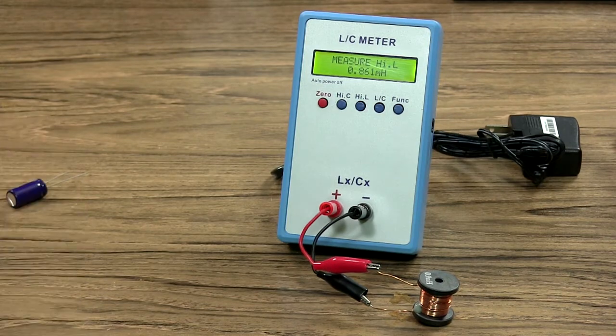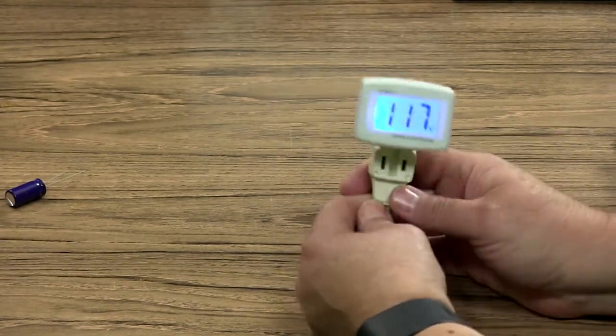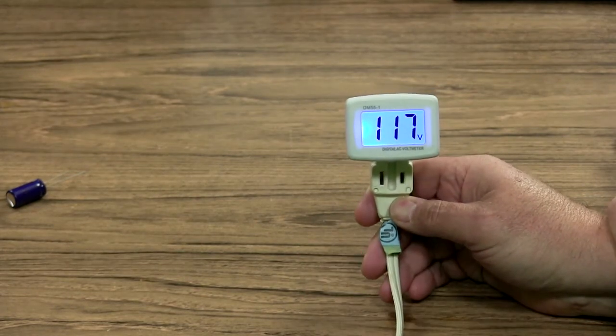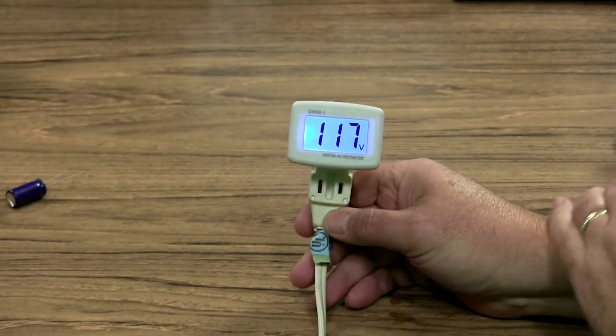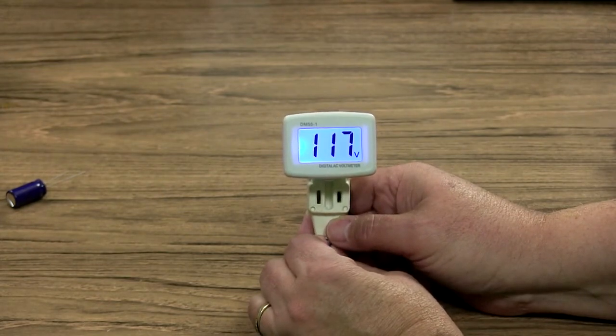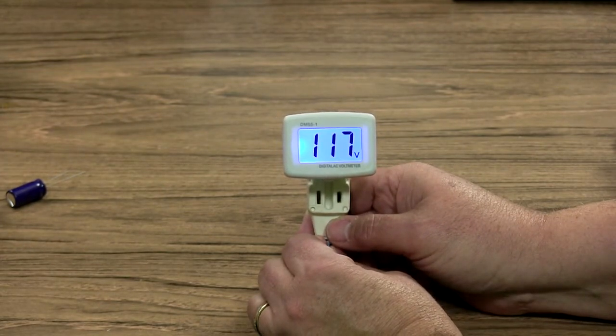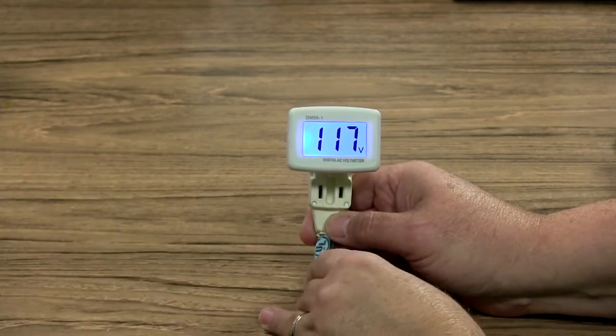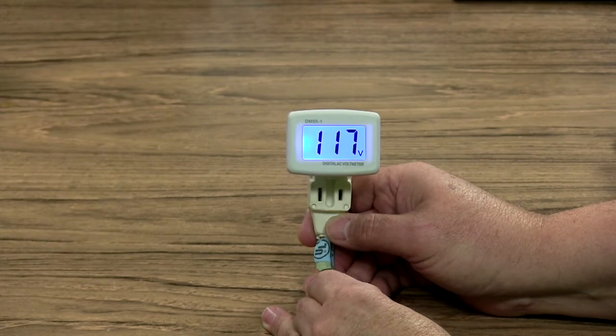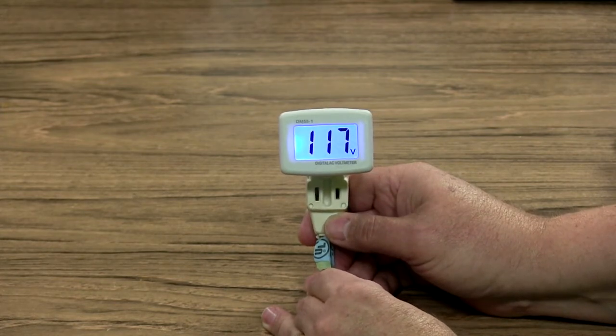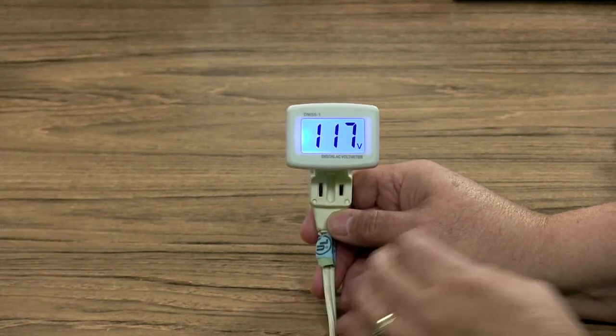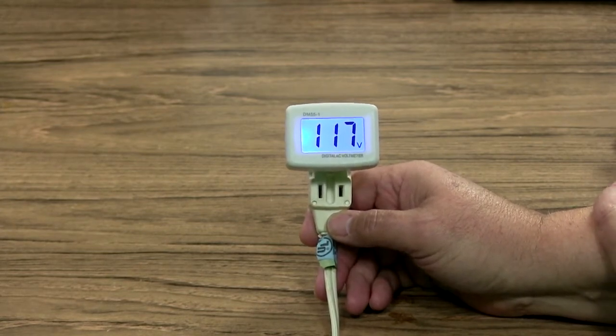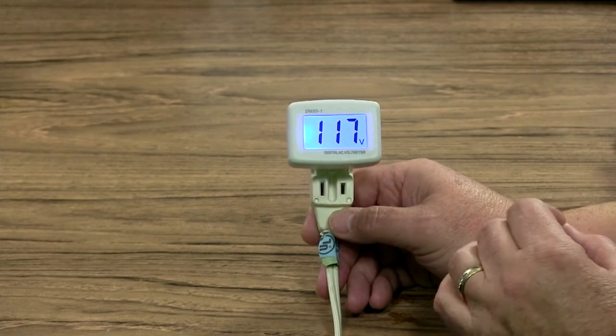And one other meter we want to show you here. This is the MFJ DM55-1. It's a handy digital AC volt meter for measuring from 80 to 200 volts. It's got big three quarter inch digits on it there. It's backlit and it's accurate to plus or minus 1.5%. That'd be handy to have in your rack or in your equipment room there next to your gear, see what kind of power you're getting.